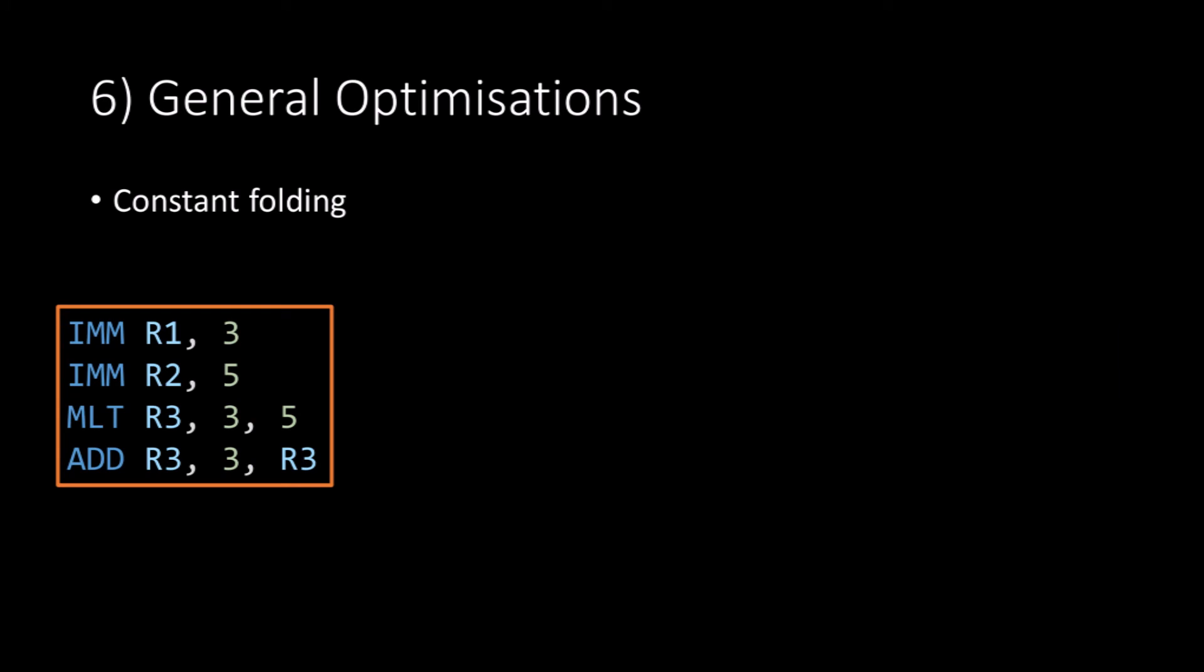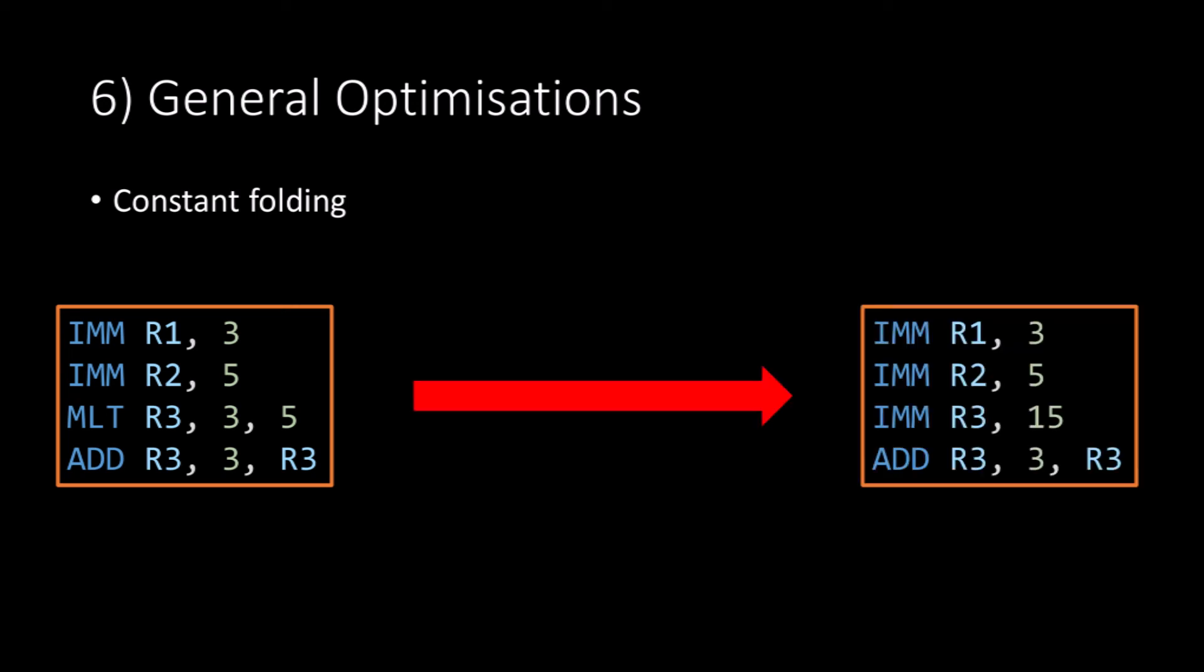Then we can take our code and do something called constant folding. This is where the output of an instruction can be predicted at compile time. Most notably, the multiply instruction here is simply multiplying two constant values, 3 and 5. These multiply to get the constant 15. What this means is we can replace our mult instruction with an immediate instruction which puts the value 15 into register 3. This gives us the code on the right.